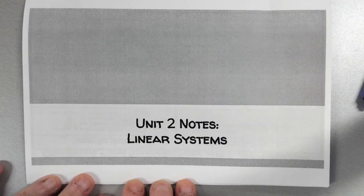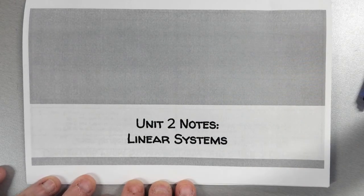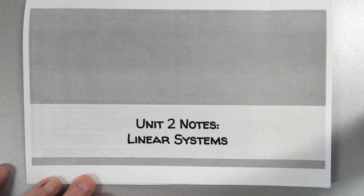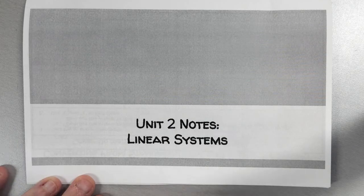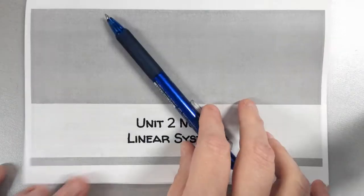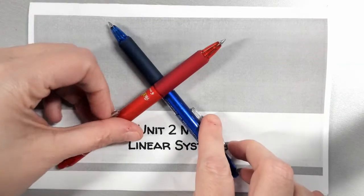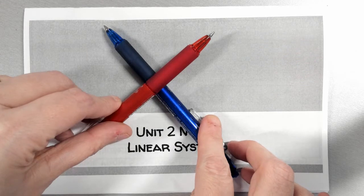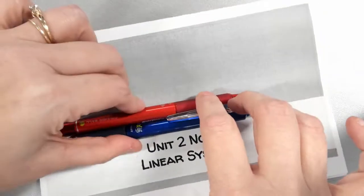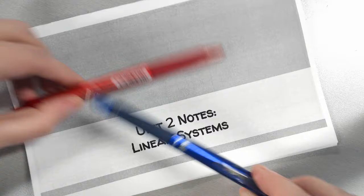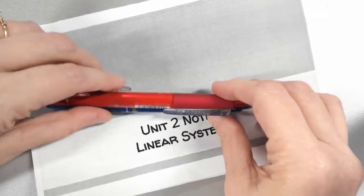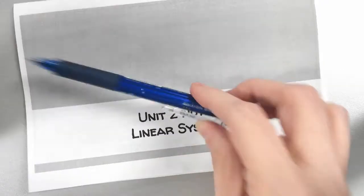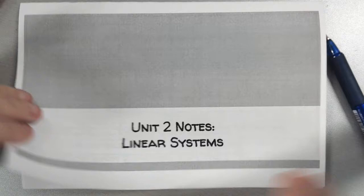We're starting our unit on systems of equations and inequalities. In Algebra 1, we only focus on linear systems, but the more important question is: what is a system? A system is when we have two lines and we're looking at how they interact. Do they cross? Do they never cross? Do they always cross? This should sound familiar — one solution, no solution, and infinitely many solutions.